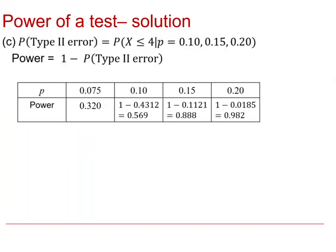The last part of this test asks us to find different values for the power of the test at different values for p, the probability of faulty items being produced. Exactly the same evaluation needs to happen in terms of requiring X to be less than or equal to 4, but for these different values of p. Once those are found, they're subtracted from 1 so that we can work out the power of the test for different values of p.